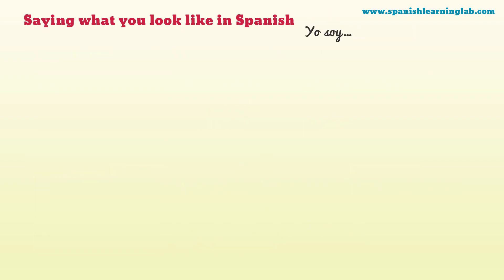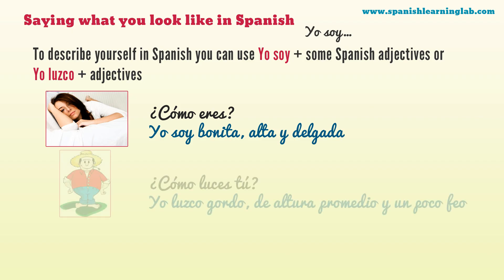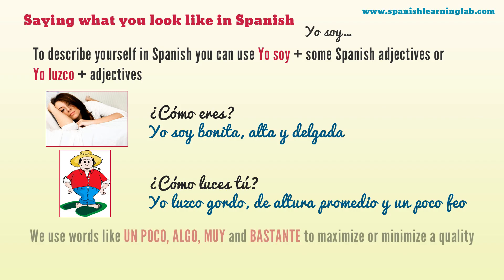Saying what you look like in Spanish — Yo soy. To describe yourself in Spanish, you can use yo soy plus Spanish adjectives, or yo luzco plus adjectives. For example: ¿Cómo eres? Yo soy bonita, alta y delgada. ¿Cómo luces tú? Yo luzco gordo, de altura promedio y un poco feo.